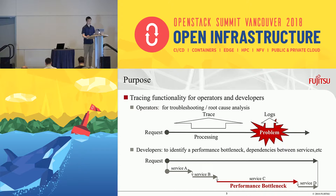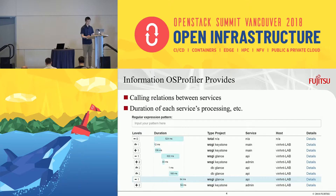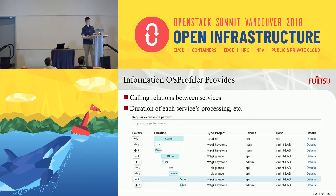I'll talk about more details later. The most important information that OS Profiler provides are the calling relation between services and functions, and the duration that a service and function takes to handle a request. This figure is just one example of standard output of OS Profiler. You can see how a request is handled in multiple services. In this case, OpenStack took 524 milliseconds to handle the request in total.